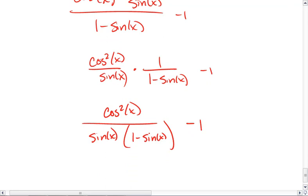If you see a 1 minus or 1 plus sine or cosine, what you're going to want to end up doing is actually multiplying it by its pair to make it into a Pythagorean identity.